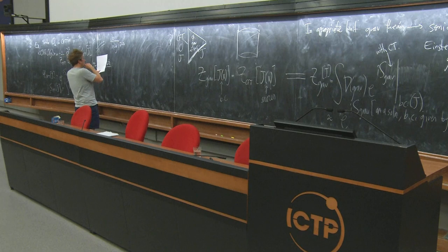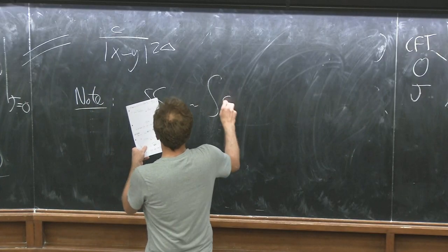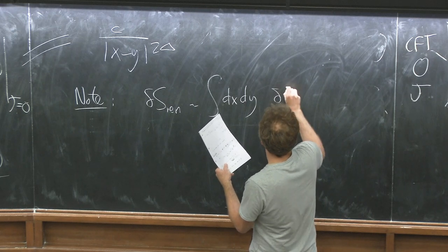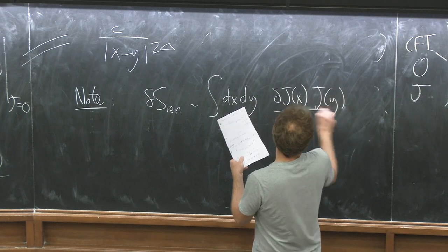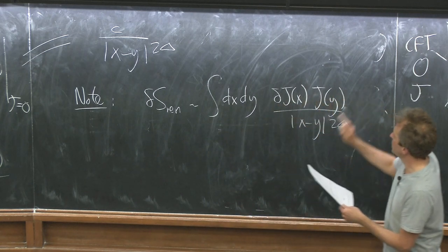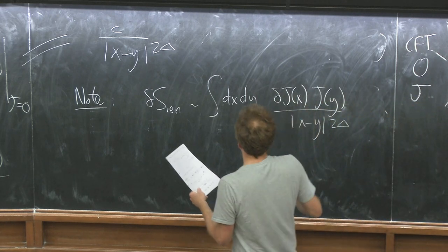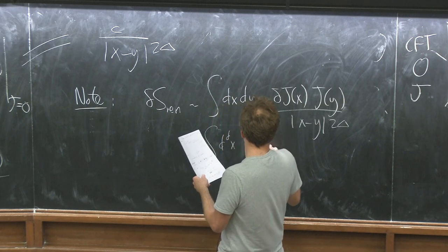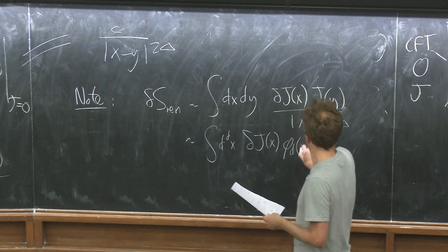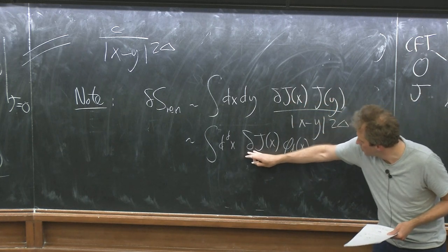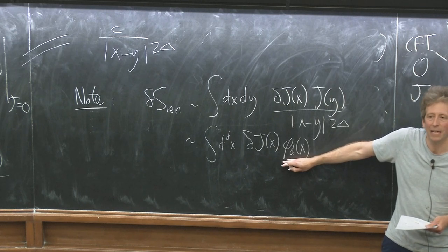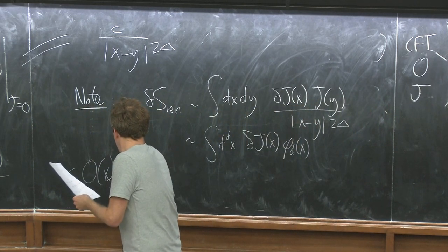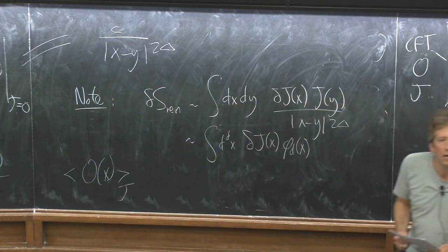It's important to understand: you could go away and calculate any correlation function you like once you know the solution. You could calculate it for whatever fields you wanted, maybe with non-linear interactions, and then functionally differentiate as many times as you like to calculate arbitrary correlation functions. It may be technically tricky, but in principle one can do it.